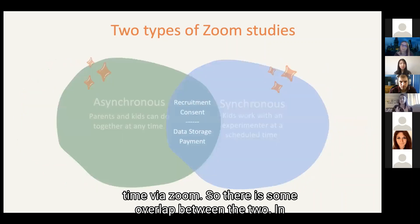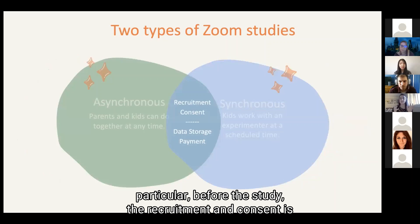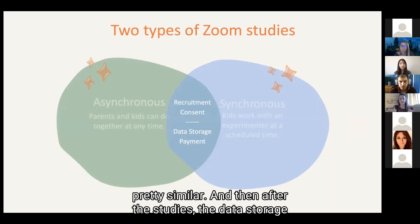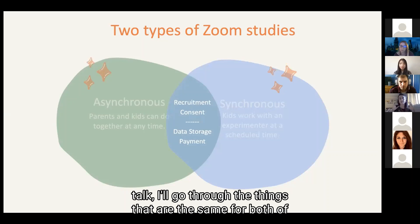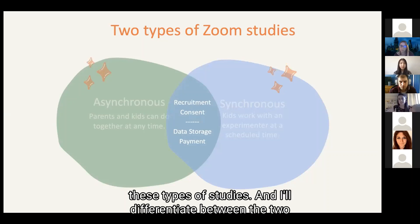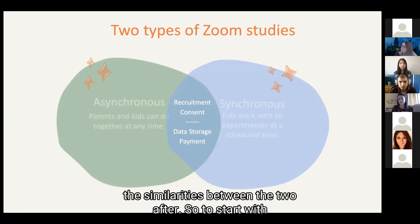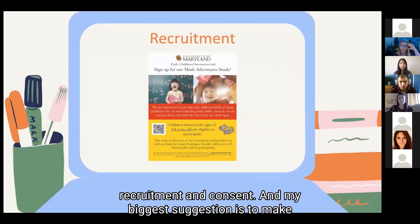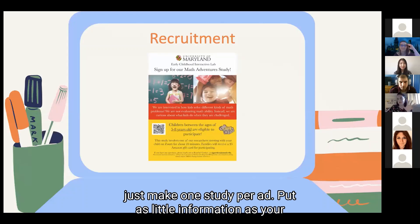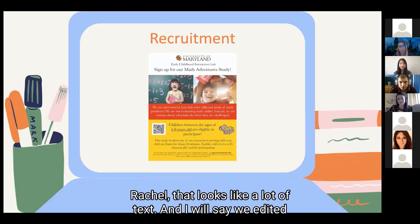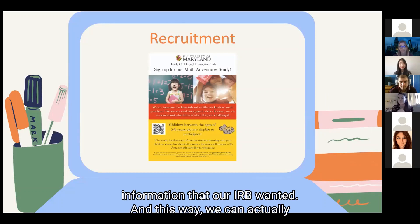There is some overlap between the two study types — recruitment and consent is similar before the study, and data storage and payment are the same afterwards. My biggest suggestion for recruitment is to make one ad per study and put as little information as your IRB will allow. We edited our ad as much as possible without leaving out critical information, allowing it to be distributed in any way — via email, social media, or email blast directly to parents or schools.